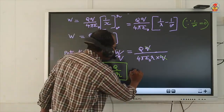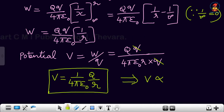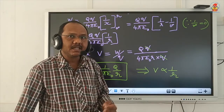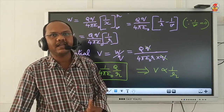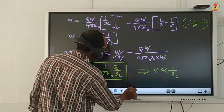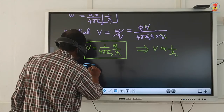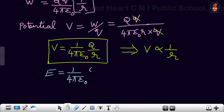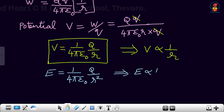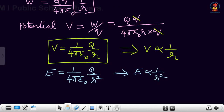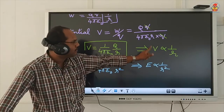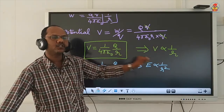From this expression it is clearly understood that electric potential due to a point charge is inversely proportional to R. In the last chapter we studied that the electric field due to a point charge is E = (1/4πε₀) × Q/R². So electric field E is proportional to 1/R², while electric potential V is proportional to 1/R.